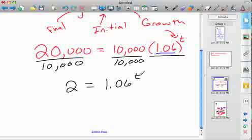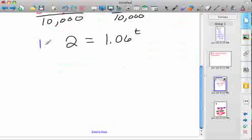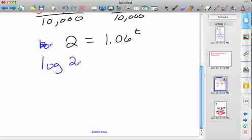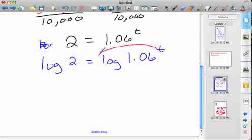To use that fourth most important thing, what I'm going to do here is log both sides. When I log both sides, if you remember that fourth thing we talked about, remember that lets that t pop out here to the front of the logarithm. And I'm using the common logarithm, there's really a base 10 there, but you can leave it out, because it's called the common logarithm for a reason, we're a base 10 system.